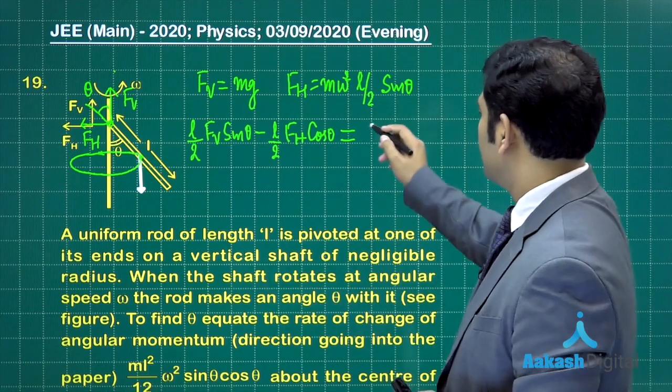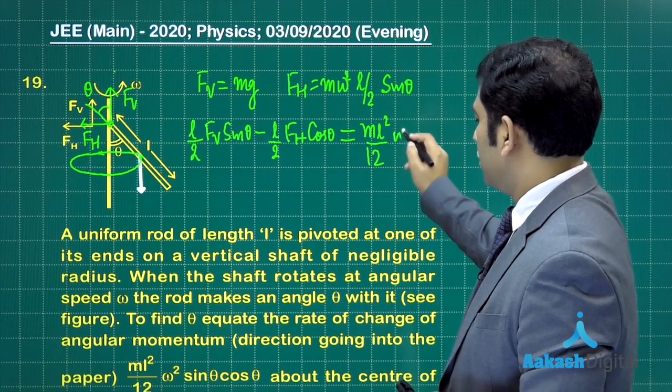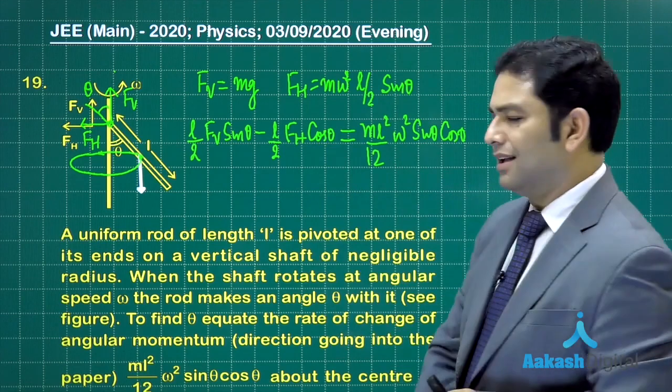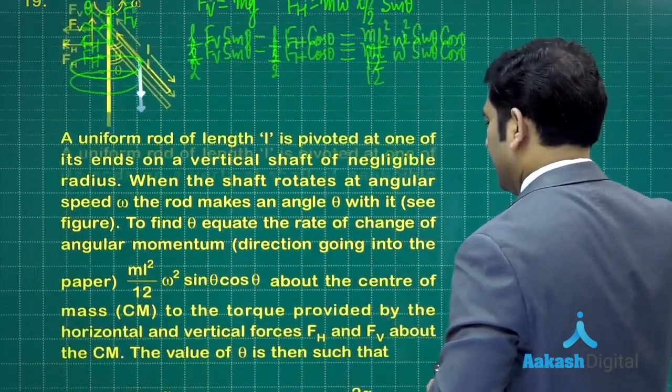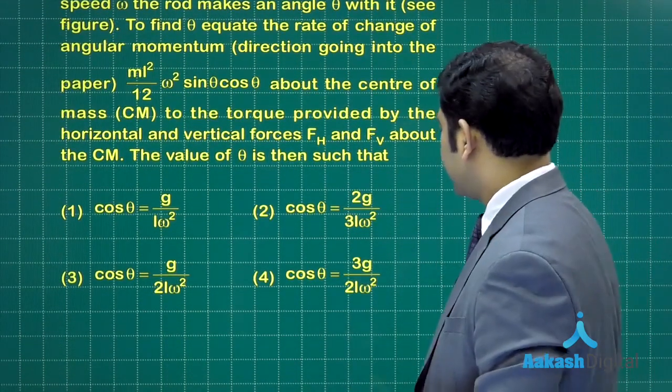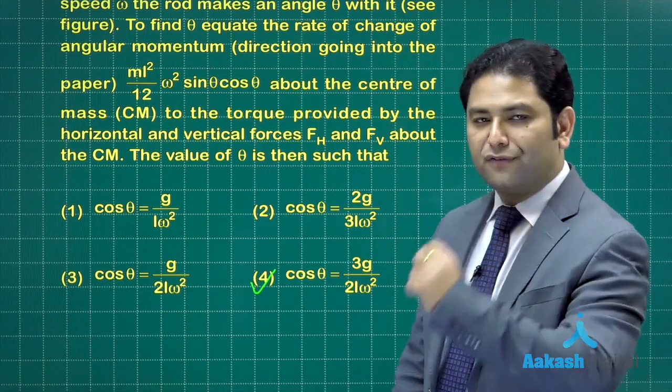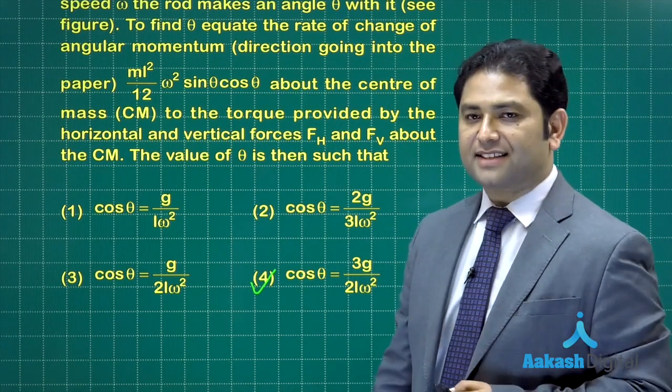They are subtracted because this torque is cross, this torque is dot. This torque should equal mL square by 12 omega square sin theta cos theta. A little bit of calculation and you get cos theta as 3G by 2 omega square L. Option number 4 is correct.